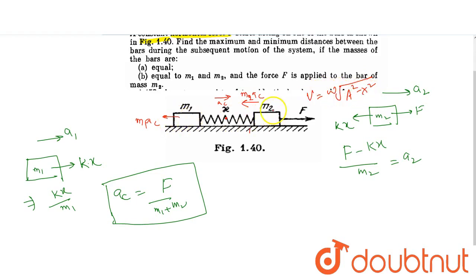The maximum extension occurs at the extreme position where the velocity is zero, analyzed in the center of mass frame.